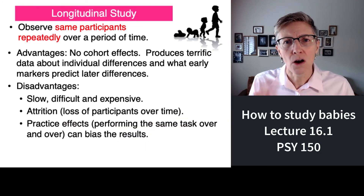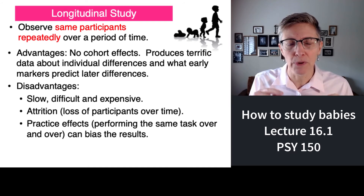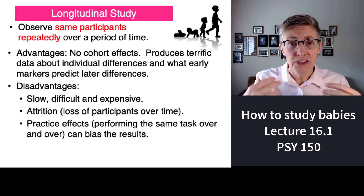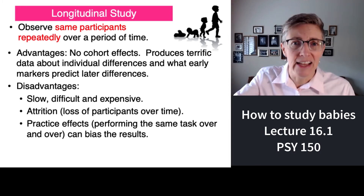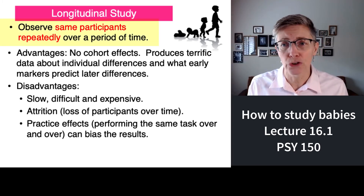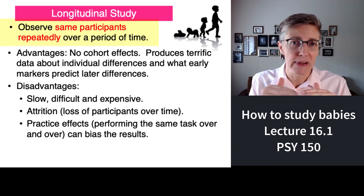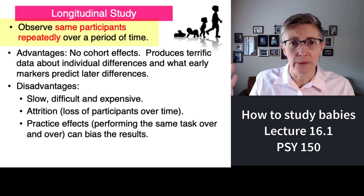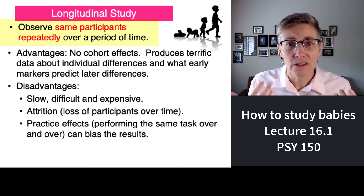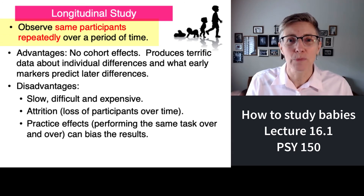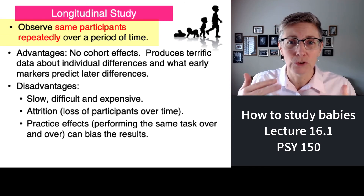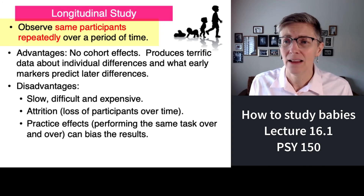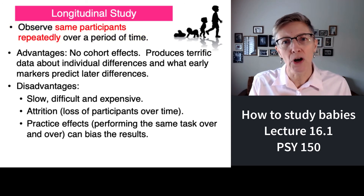So you might say, let's get rid of the cohort problem. Let's study people of a particular age group — say, CSUN freshmen — study them now and then study them again in 5 years, then in 10 years and 15 years. That would be a longitudinal design, where you take the same participants, maybe everybody of a particular age or at a particular university, and you study them over and over again. This has the advantage that there won't be any cohort effects, because everybody of the same age will have grown up in much more similar circumstances. And it's going to give you terrific data about individual differences, early markers, and all sorts of great things.